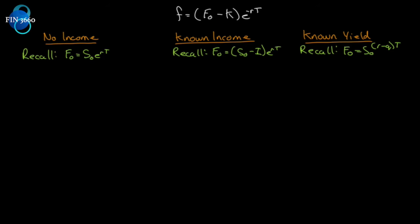Let's look at our three scenarios — remember we're talking about an investment asset, not a consumption asset. Under the three scenarios — no income, known income, and known yield — we know that the value of the forward or futures contract at any point in time is F₀ minus the original delivery price, discounted back. The forward price for no income is S₀e^(rT), for known income it is (S₀ - I)e^(rT), where I is the net present value of income.